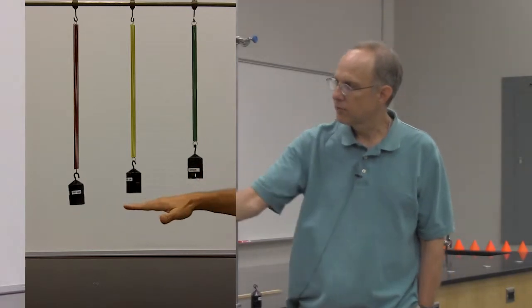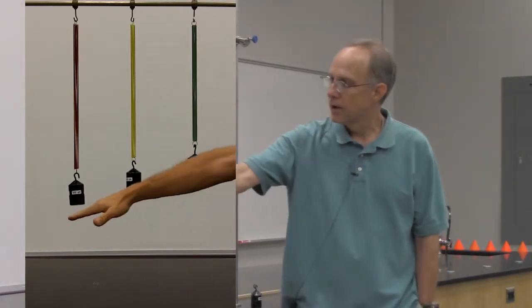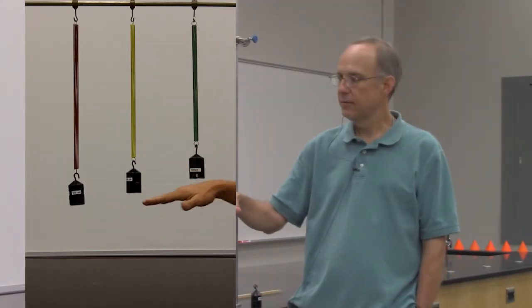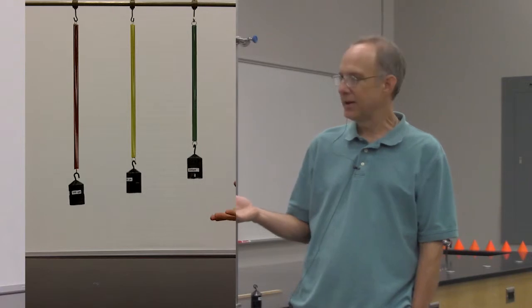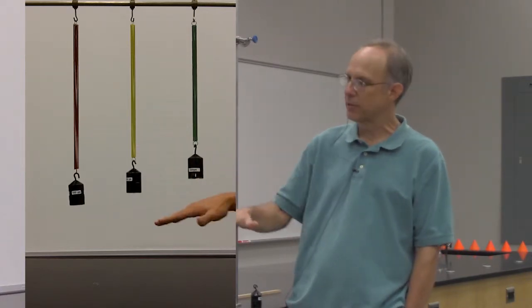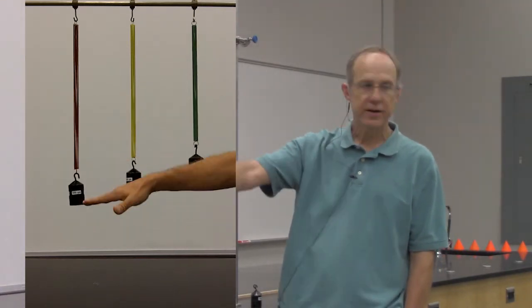We have hung from those springs the same weight. Each one of these is a 500 gram mass, and so we're pulling down with roughly a 5 newton force on each one of them. We can see that the weakest spring is stretched by the largest amount.